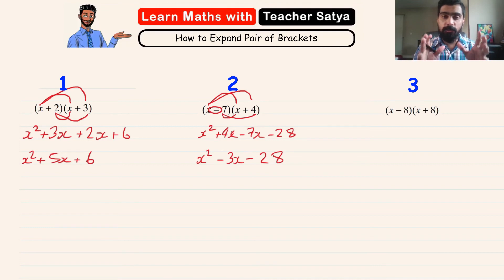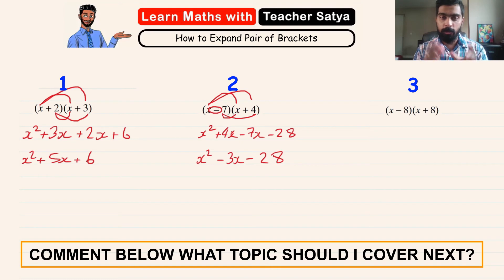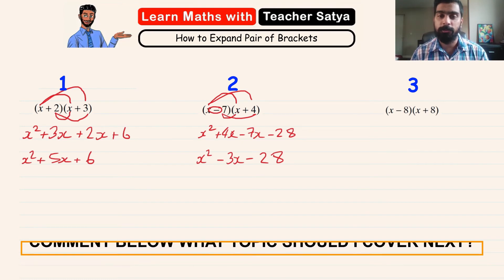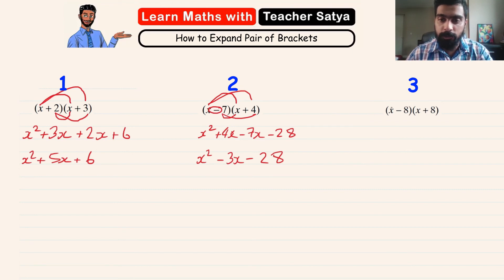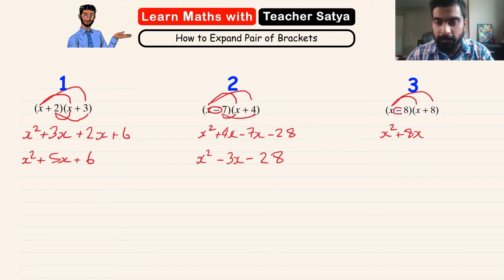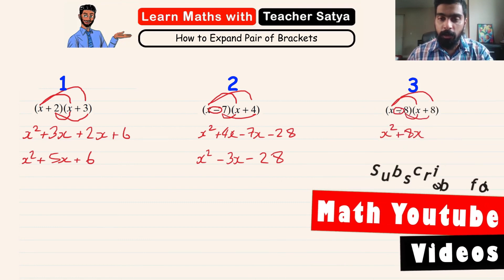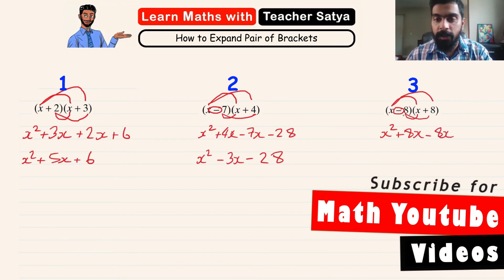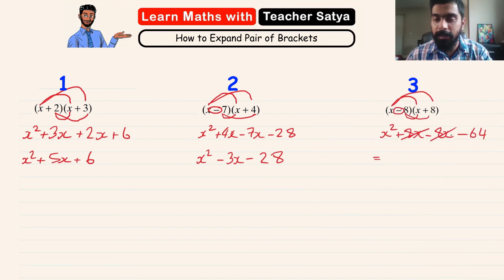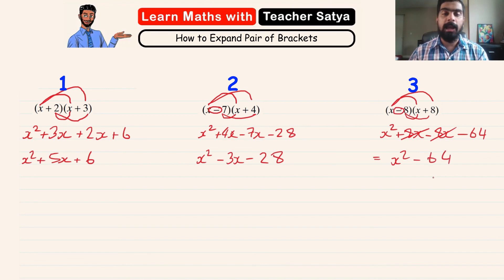For future videos, if you want me to cover a specific topic, comment below and I'll look into it. For question 3, we follow the same steps: x times x gives x squared, x times 8 gives plus 8x. We have a negative here, so negative 8 times x gives negative 8x, and negative 8 times 8 gives negative 64. 8x and minus 8x cancel to zero, so the final answer is x squared minus 64.